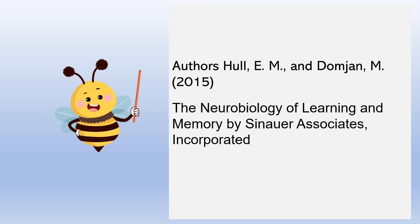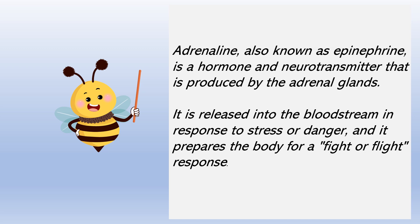Authors Hull, E.M., and Domjan, M. (2015) state in the Neurobiology of Learning and Memory by Sinauer Associates, Inc. Adrenaline, also known as epinephrine, is a hormone and neurotransmitter that is produced by the adrenal glands. It is released into the bloodstream in response to stress or danger, and it prepares the body for a fight or flight response.